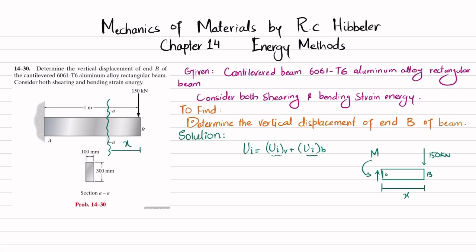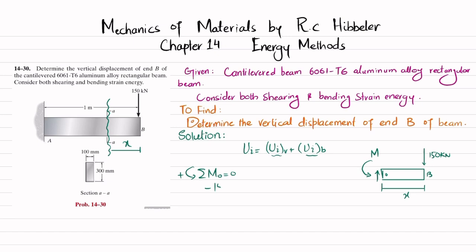We find the moment using the equation of equilibrium: sum of all moments about point O equals zero, taking counterclockwise as positive. The moment due to 150 kN at perpendicular distance x is clockwise, so it's negative: −150x. The external reaction moment is counterclockwise and positive. Setting the sum to zero gives M = 150x.